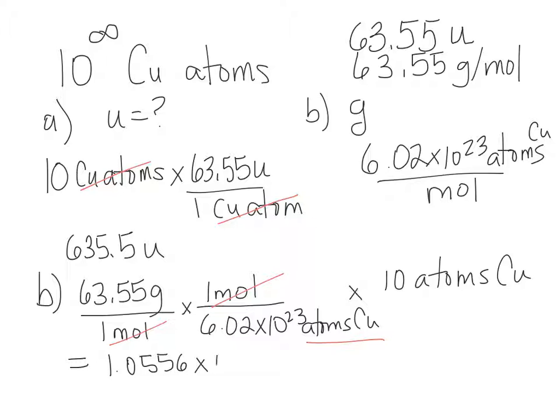1.0556 times 10 to the negative 21 grams. That's so light you couldn't even feel it if it hit you on the nose. Negative 21 grams, that's really, really small. There's 20 zeros before that one. How many significant digits can you have in your final answer? Four, because Avogadro's number is a known quantity - it's a ratio.